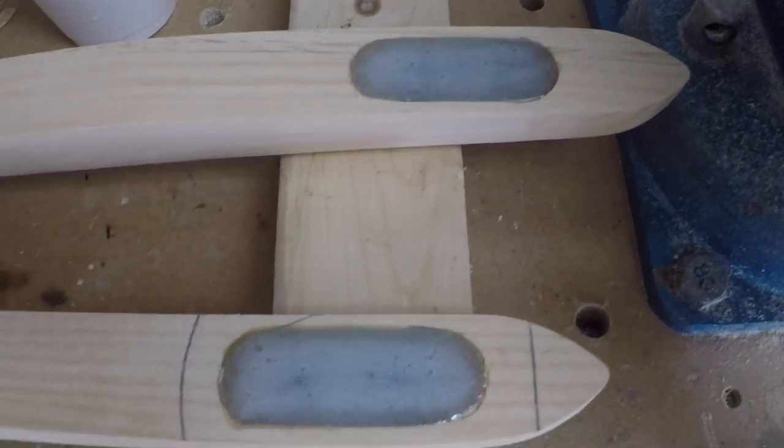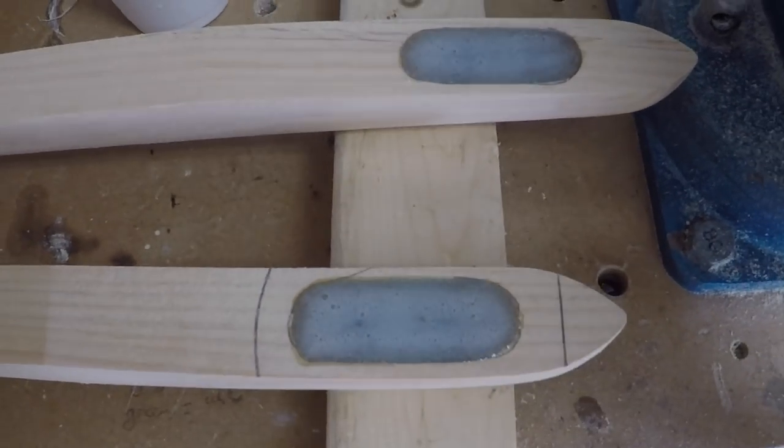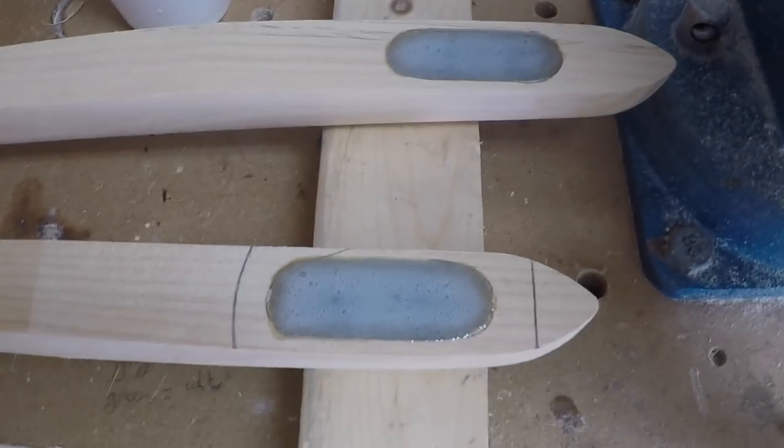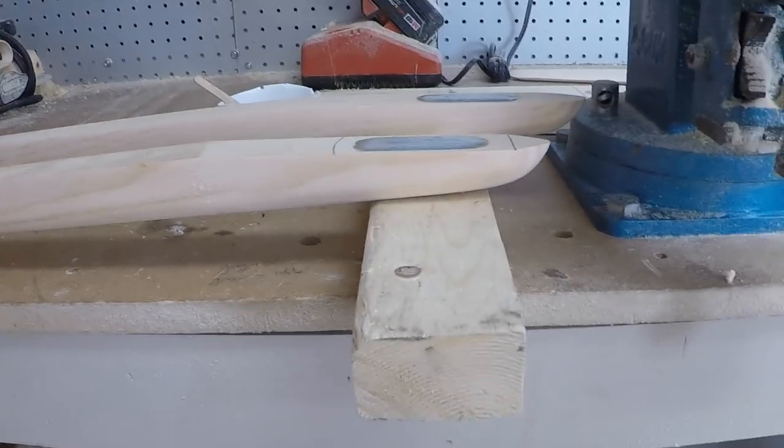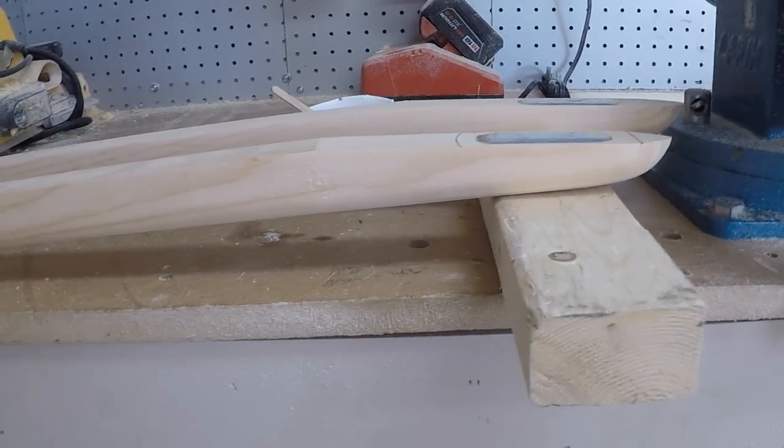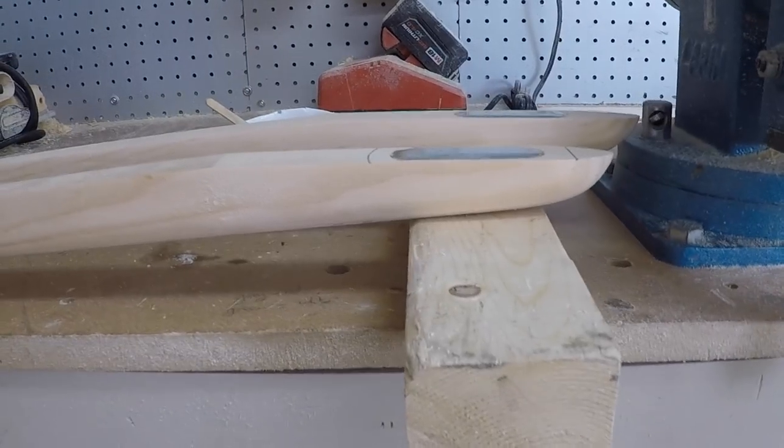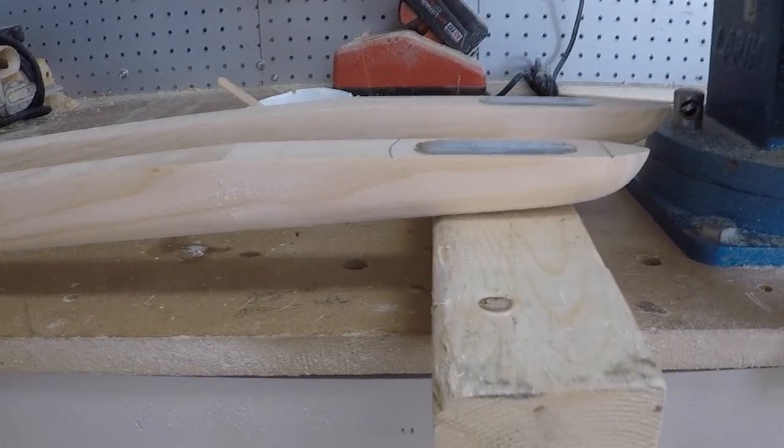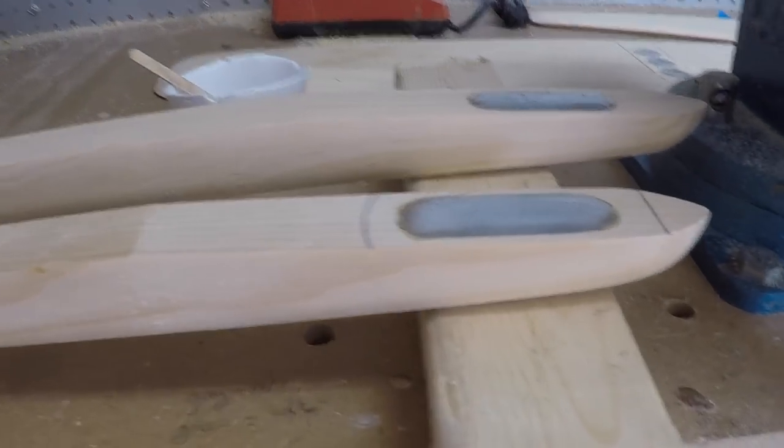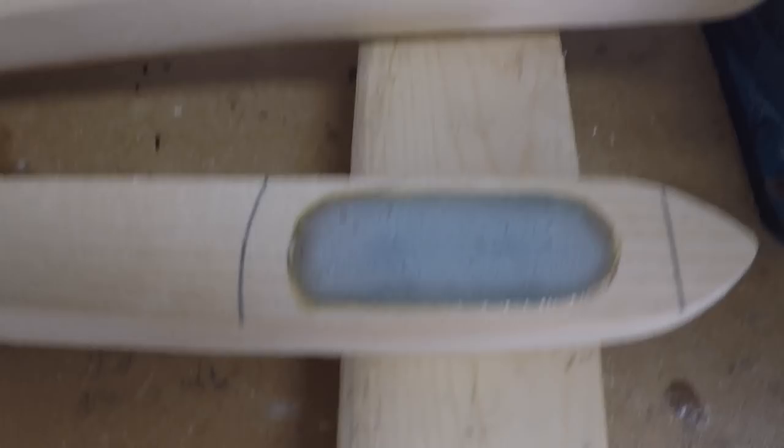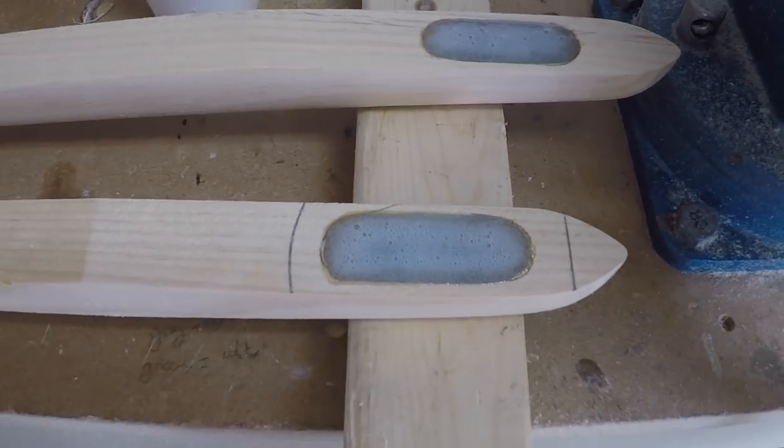Alright, so I have gone ahead and lined up the inserts for the rear of both of these fuselages. And the front has already cured. And the rear is on an angle so I prop it up on this 2x4 just to get that back portion nice and level so the epoxy doesn't flow out and then pour as normal and wait for it to cure.